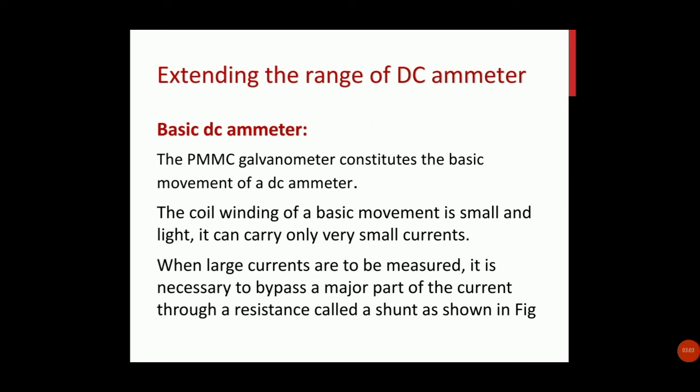The coil winding of the basic movement is small and light; it can carry only a few small currents. When large currents are to be measured, it is necessary to bypass the major part of the current through a resistance called a shunt. This shunt carries the major part of the high currents through the resistance.